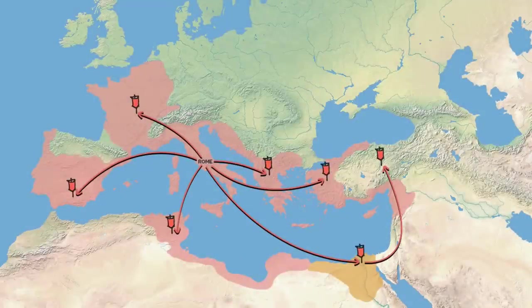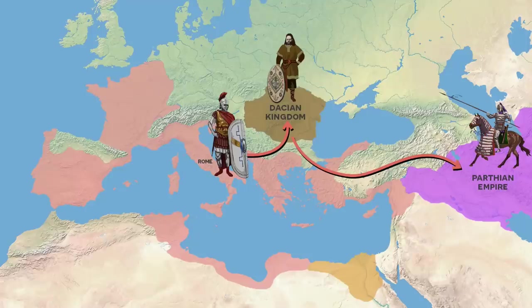There are nearly endless ways to explore the ripple effects of this alternate historical path, and so in this miniseries, we'll be following a story arc based around Caesar's planned invasions of Dacia and Parthia, attested to by historical records.